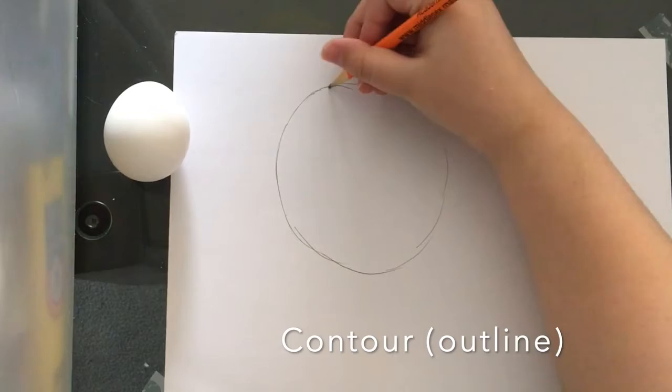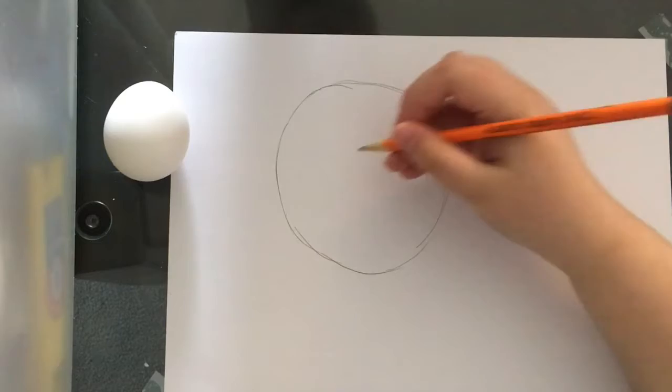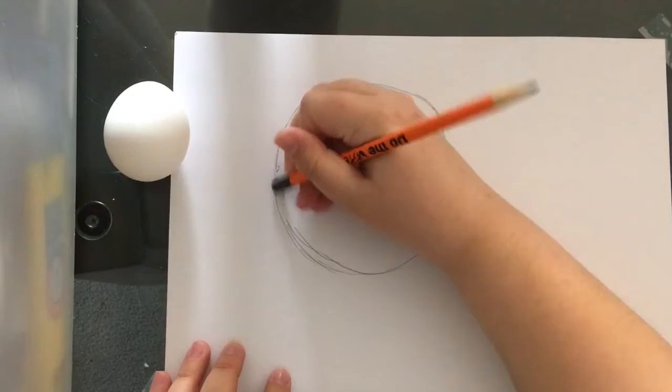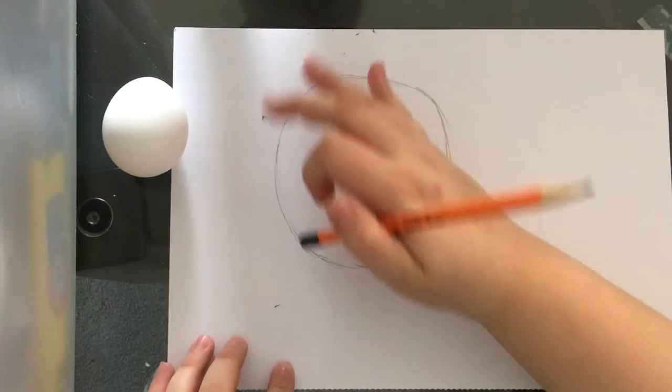Right now I am doing a contour of the egg from my perspective. I'm seeing it from the side, that's my cat. He's going to get curious throughout this video. I'm drawing what I see from my side view, you're seeing the top of the egg in this video.